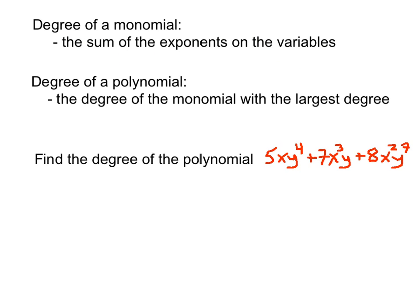To find the degree of each monomial in the polynomial, we just need to find the sum of the exponents on the variables. Look at each monomial separately, and add up the exponents on the variables. Then once you have a degree for each monomial, the degree of the polynomial is the degree of the monomial with the largest degree — you just choose the largest one.